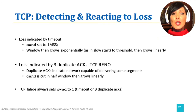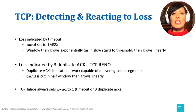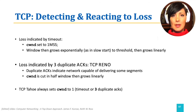TCP interprets timeouts as well as triple-duplicate ACKs as possible indicators of loss of a segment. TCP reacts to these two events differently, and these reactions also differ between TCP implementations. For a loss indicated by timeout, TCP resets the congestion window size to one MSS and restarts the slow start mechanism. For a loss indicated by triple-duplicate ACKs, TCP Reno cuts the window size in half, but TCP Tahoe reacts the same way as for timeouts and sets the window size to one MSS.